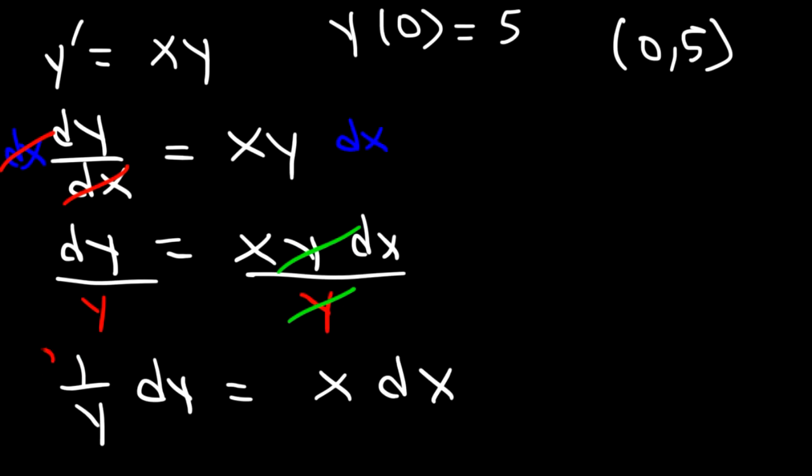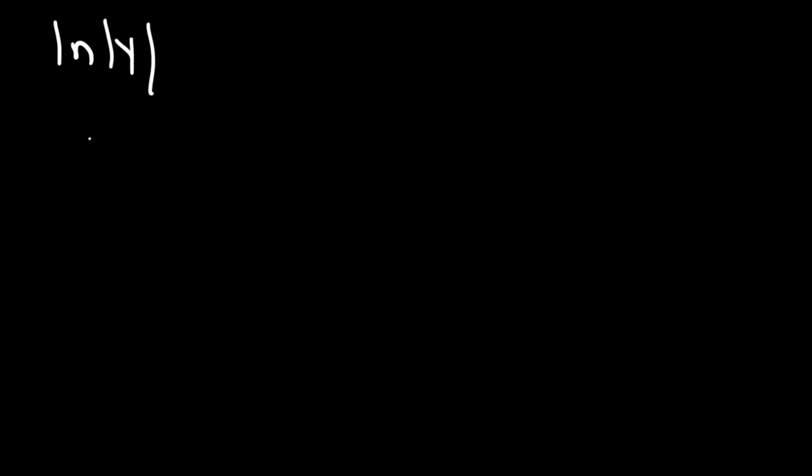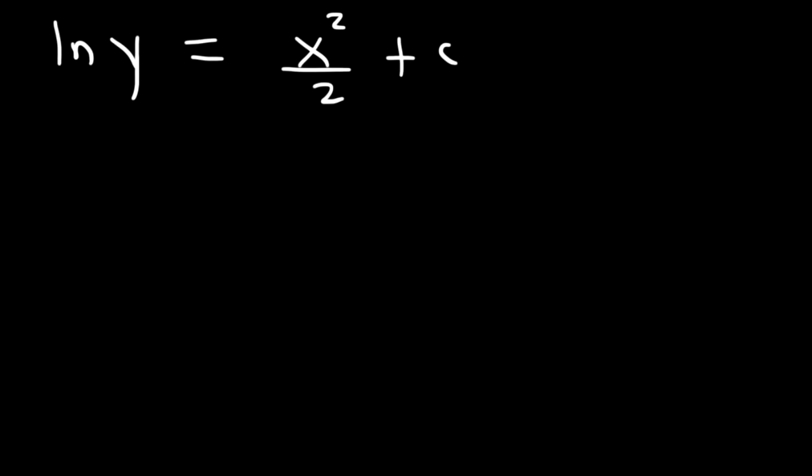Now let's find the antiderivative of both sides. The antiderivative of 1 over y is the natural log of y, written as ln(y). And the antiderivative of x is x squared over 2 plus c.